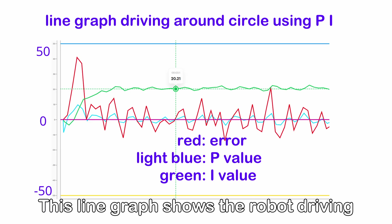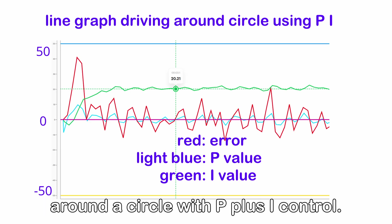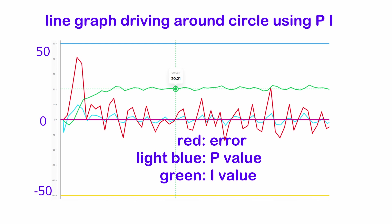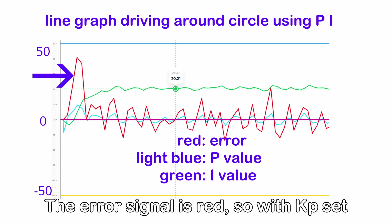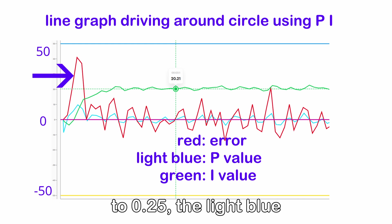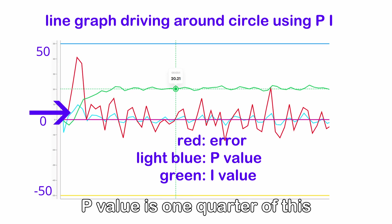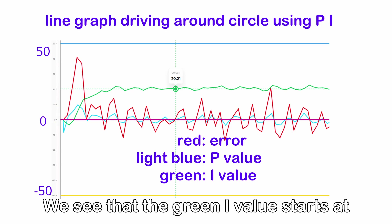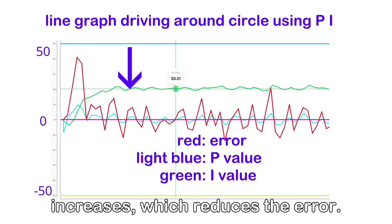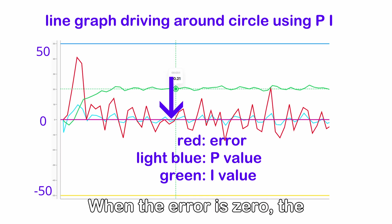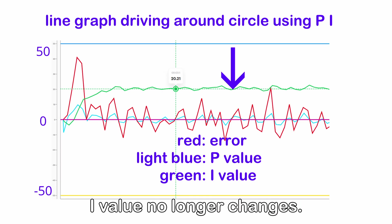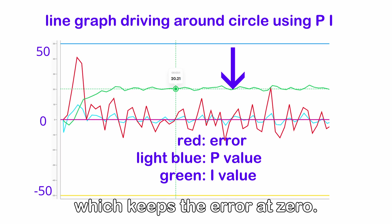Every 8.2 milliseconds in this case. This line graph shows the robot driving round a circle with P plus I control. The error signal is red, so with KP set to 0.25, the light blue P value is one quarter of this. We see that the green I value starts at 0 and slowly increases, which reduces the error. When the error is 0, the I value no longer changes. It remains at the value which keeps the error at 0.